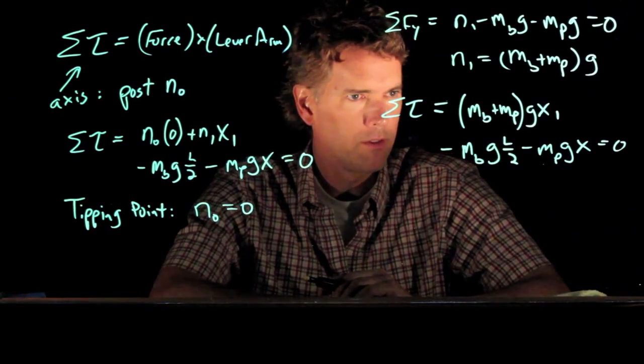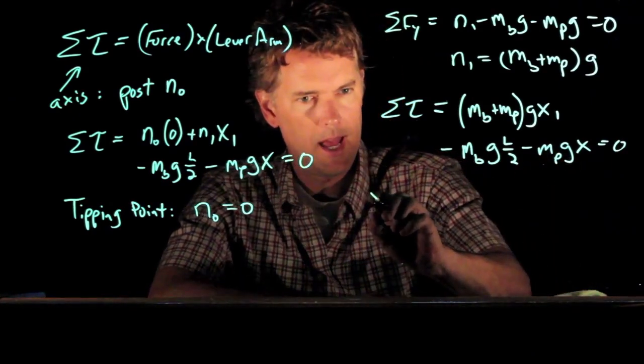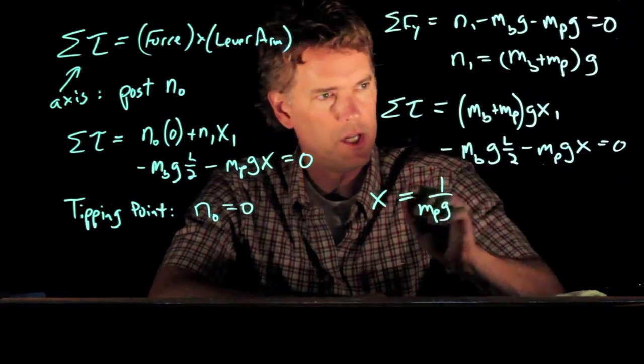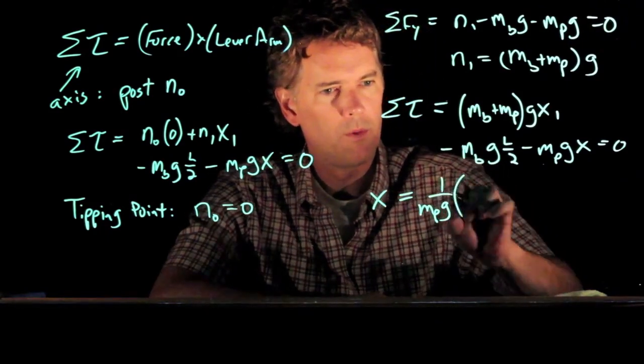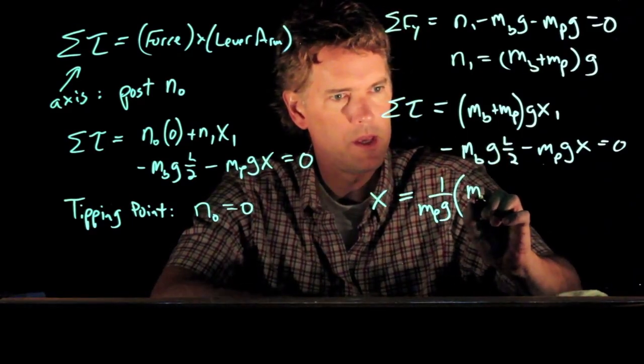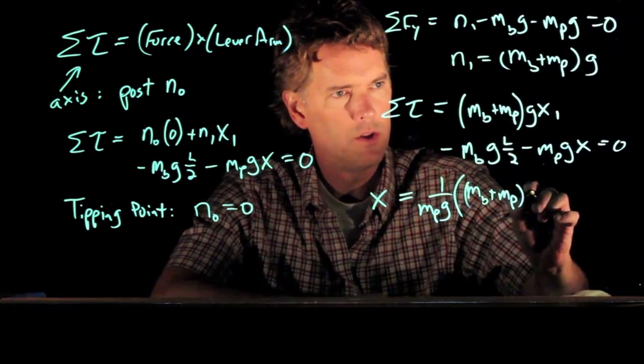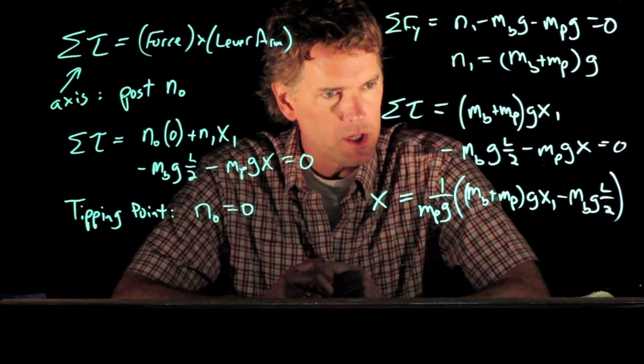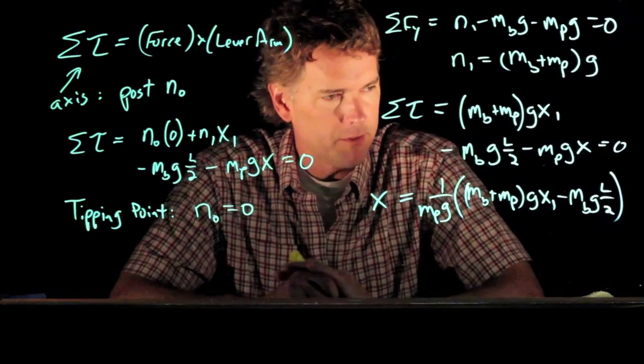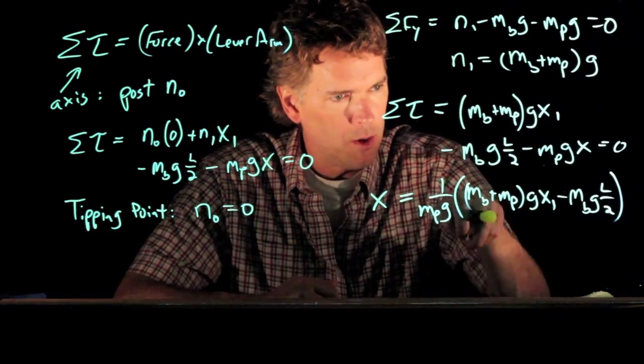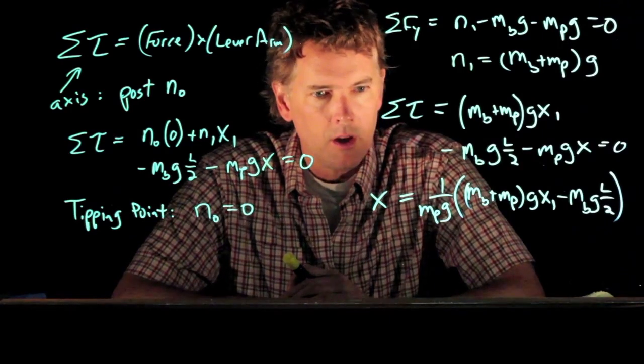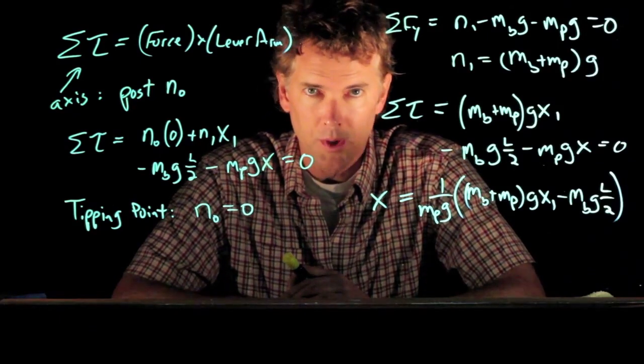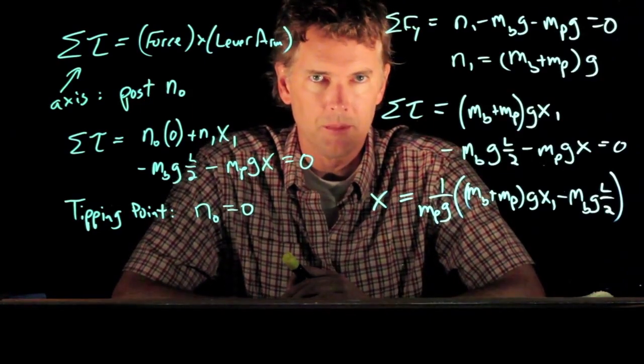So if we move that last term over to the other side, we get X equals, we're going to have to divide by MPG, and the rest of the terms are all this other stuff. Mb plus MPGX1 minus... Okay, so you can work out the torque equation and get a solution for X, as I've shown here, and depending on those values, you'll get a real number for X. When you're all done, make sure that your value of X makes sense in terms of its location on the beam. All right, hopefully that's clear. If you have any questions, come see me in my office. Cheers.